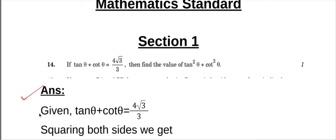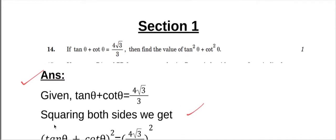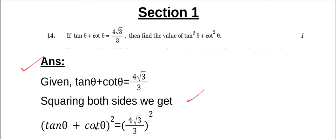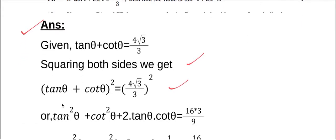Squaring both sides, we get: (tan θ + cot θ)² equals (4√3 by 3)². We will use the (a + b)² formula.